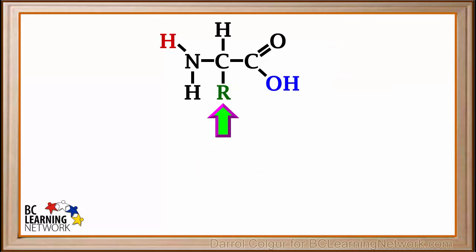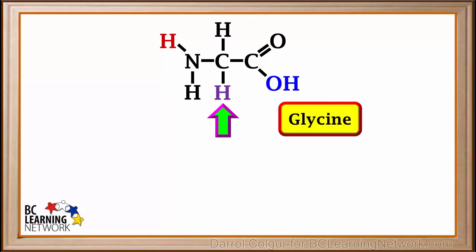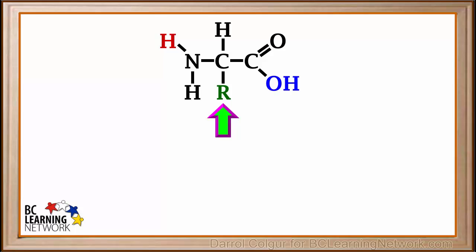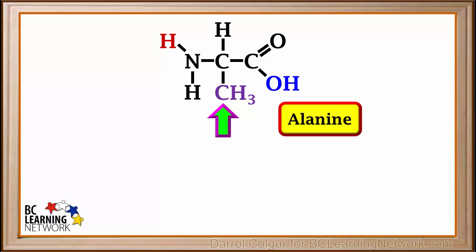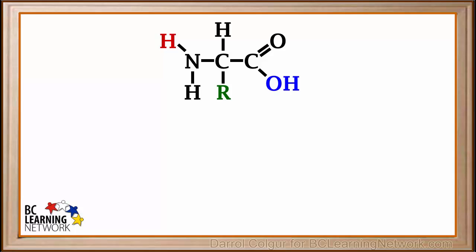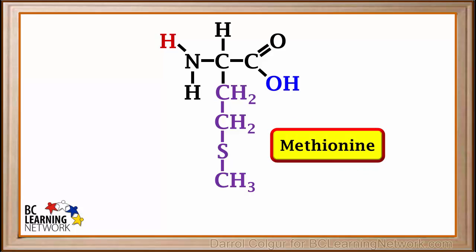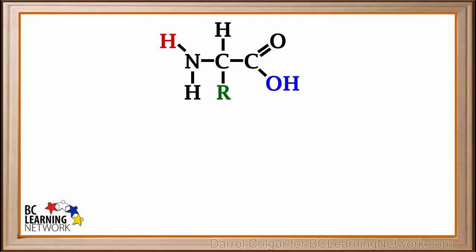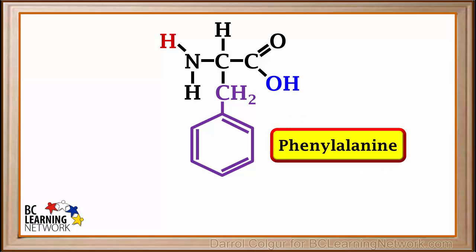If we replace the symbol R by a single hydrogen atom, we get the simplest amino acid, which is called glycine. If we replace the symbol R by a methyl group, CH3, we get the amino acid called alanine. Replacing R with this group gives us the amino acid called valine. Some contain the element sulfur, giving us the amino acid called methionine. Some contain a benzene ring or phenol group, giving us the amino acid phenylalanine.